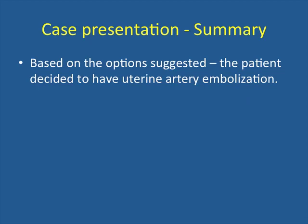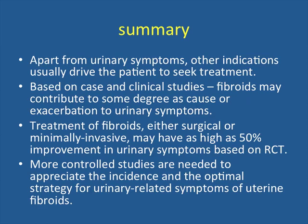Finally, in the case presented, based on the options suggested, the patient decided to have uterine artery embolization and is scheduled for next month. In summary of this talk: apart from urinary symptoms, other indications usually drive the patient to seek treatment. Fibroid may contribute to some degree as a cause or exacerbation of urinary symptoms. Treatment of fibroids — either surgical or minimally invasive — may have as high as 50% improvement in urinary symptoms based on randomized controlled trials. More controlled studies are needed to appreciate the incidence and optimal strategy for urinary-related symptoms of uterine fibroids.